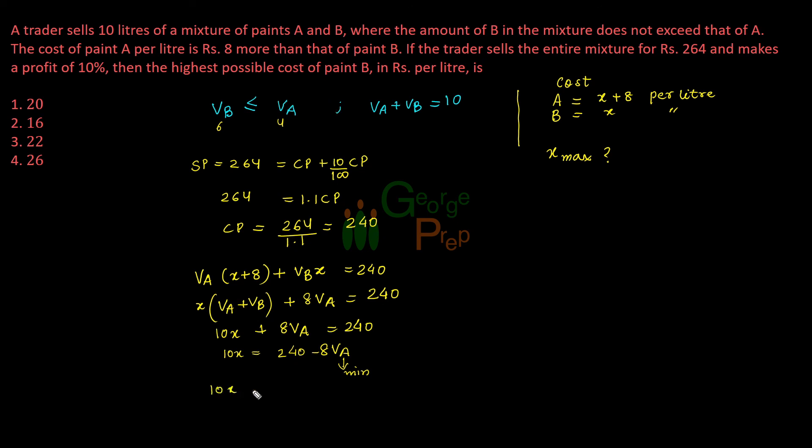So 10X equals 240 minus 8 into 5, or 240 minus 40, that is 200. So 10X is 200, or X equals 200 by 10, that is Rs. 20 per liter. That is the highest possible cost of paint B in rupees per liter. The answer is 20 for this question.